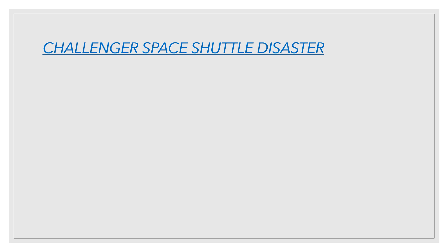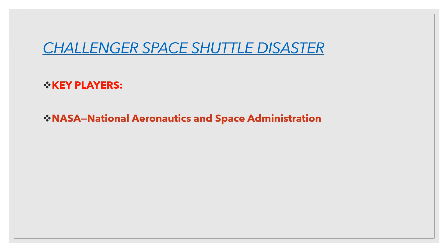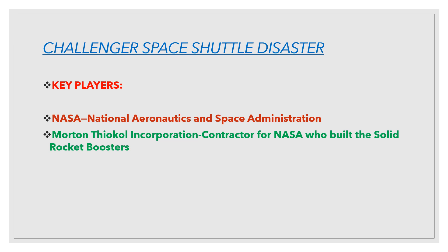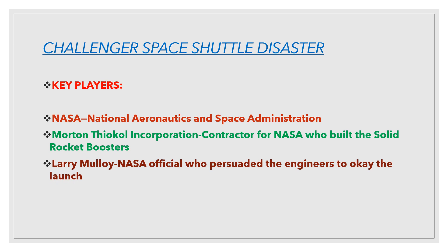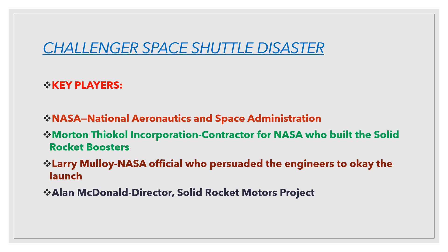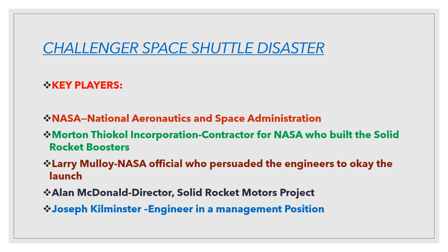The Challenger Space Shuttle Disaster occurred on a winter morning in Florida on 28 January 1986. The key players in this case are NASA — National Aeronautics and Space Administration — Morton Thiokol Incorporation, the contractor for NASA who built the solid rocket boosters; Larry Molloy, NASA official who persuaded the engineers to okay the launch; Alan McDonald, director of solid rocket motors project in Morton Thiokol; and Joseph Kilminster, engineer in a management position, also in Morton Thiokol.